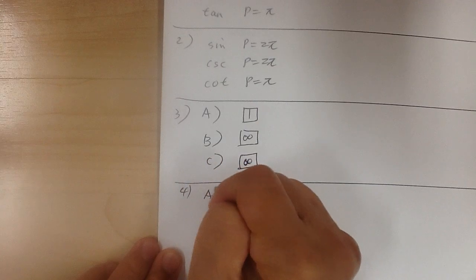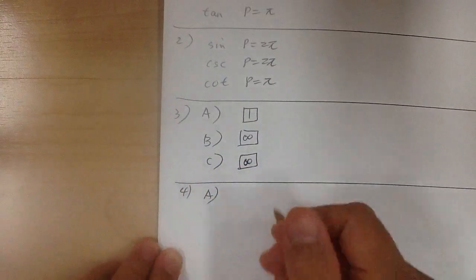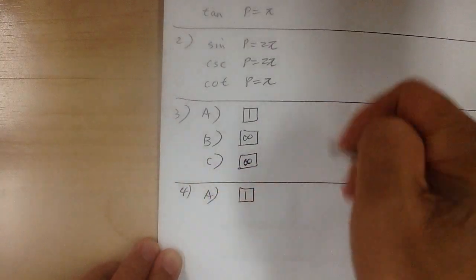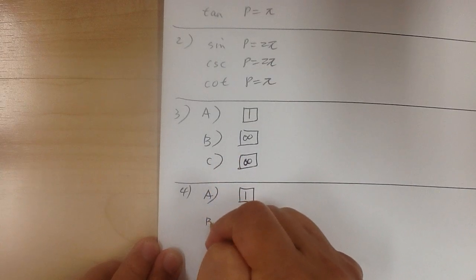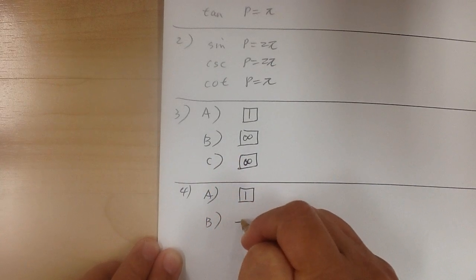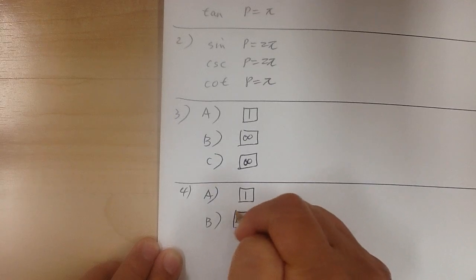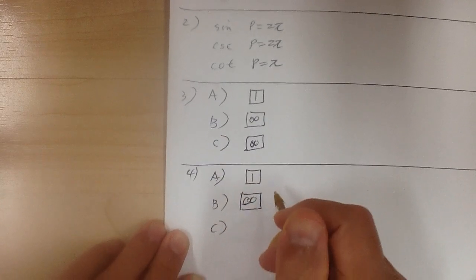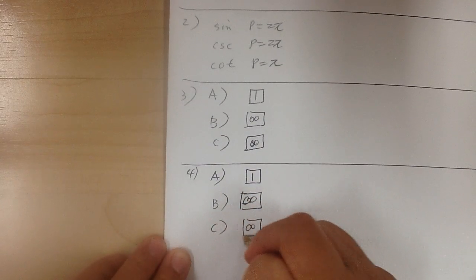Number 4. For A, cosine deviation is 1 — it goes up and down by 1. For B, tangent goes to infinity. And for C, cosecant goes to infinity.